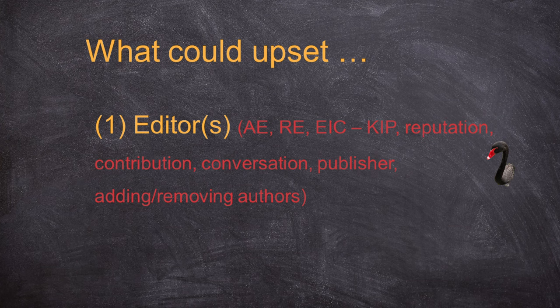In marketing journals, the associate editor is usually the one who makes a recommendation on the decision — whether to accept or reject. It breaks into two styles: either the AE can make the final decision themselves, or the AE makes the recommendation and the editor-in-chief makes the final call. And then there is a regional editor for some big journals like the European Journal of Marketing or Journal of Business Research, which have a regional editor or senior associate editor who will make a decision.